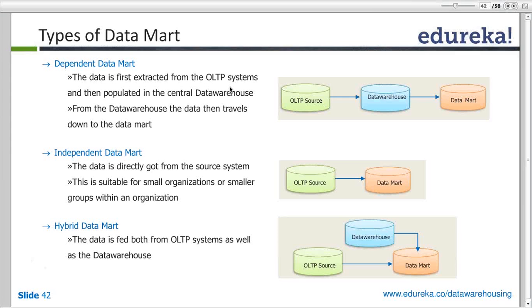Most business scenarios will be hybrid — there is nothing clear-cut in the real world. In this case, the requirement was to get data from the OLTP system, the Excel sheets, and the data warehouse, then combine the reports from the file data and the data warehouse into a consolidated report in the data mart. This type of data mart — accessing data from both the data warehouse and flat files — is called a hybrid data mart.